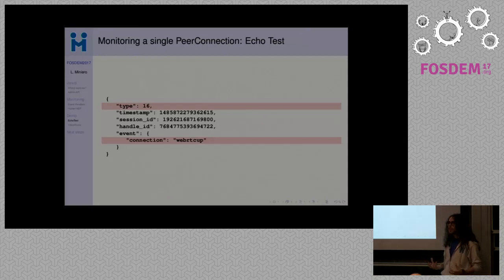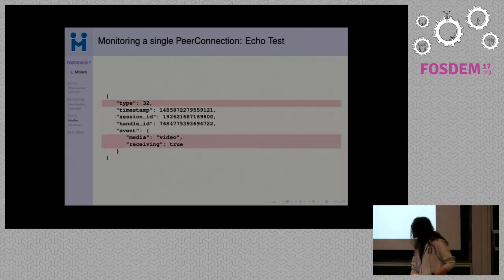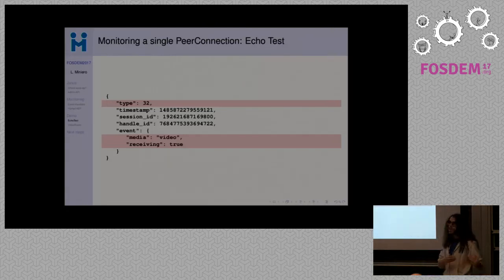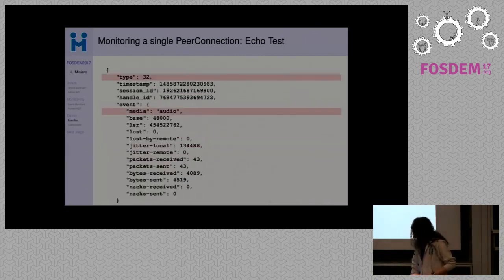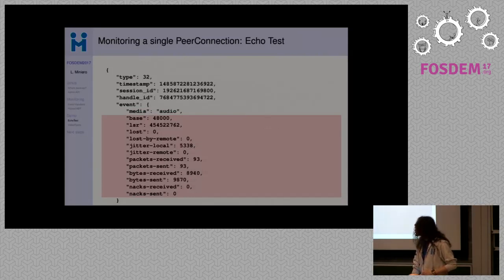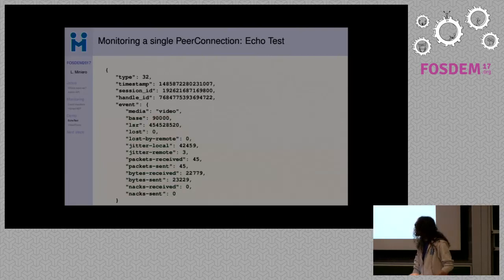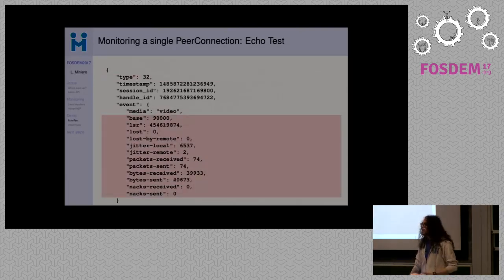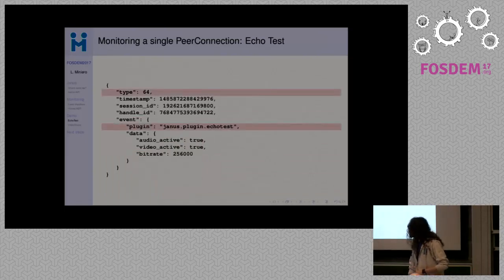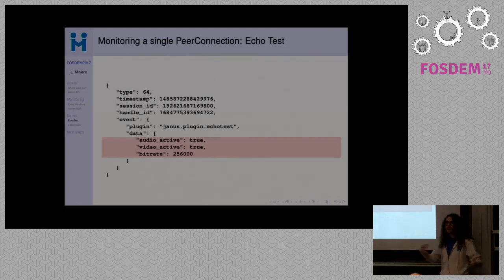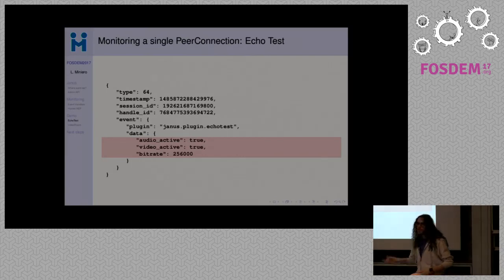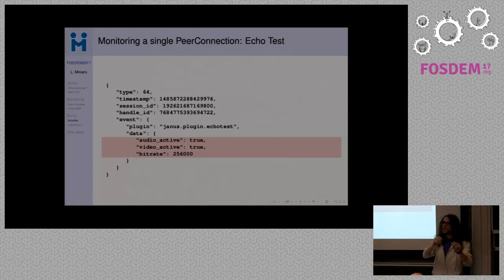After ICE completes, DTLS runs to exchange SRTP keys. We see DTLS going through a connecting phase and reaching connected; if it doesn't, we know something is wrong and get clues about why. Once DTLS is done, media starts flowing. We are notified that the connection is up from Janus's perspective, that audio and video are being received, and we get live per-second statistics about packets exchanged for both audio and video — very important for understanding whether the peer connection is doing its job.